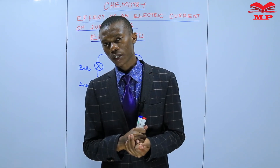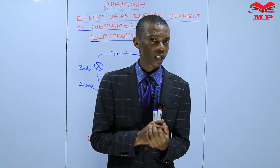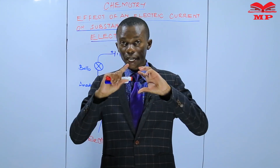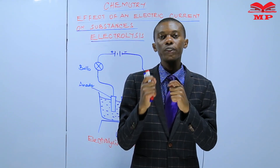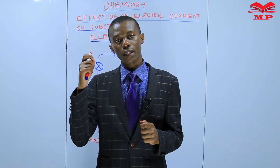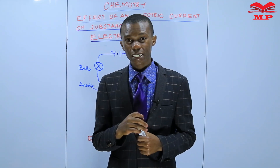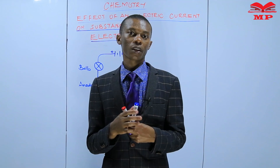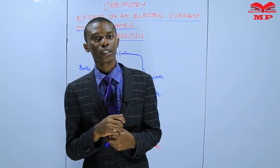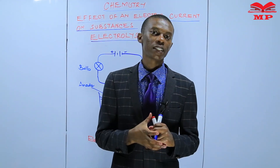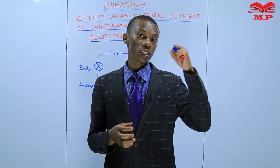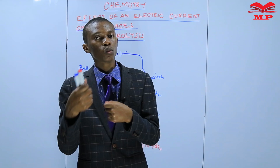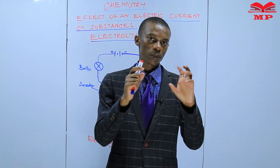In the previous lesson, we were discussing what happens during electrolysis. We said that during electrolysis of molten substances, we have positive ions and negatively charged ions. The positively charged ions are attracted to the negatively charged electrode, which is the cathode, and the negatively charged ions are attracted to the positively charged electrode, which is the anode. Once they are attracted to those areas, they migrate and are deposited at both the anode and the cathode.